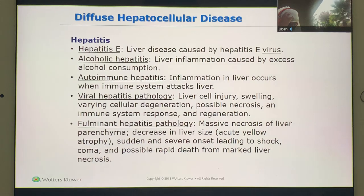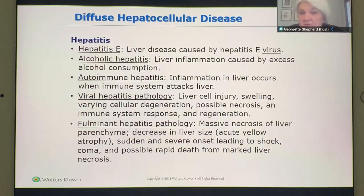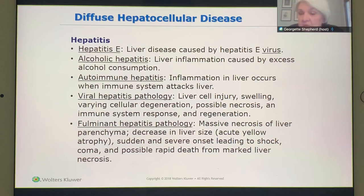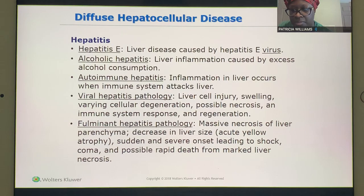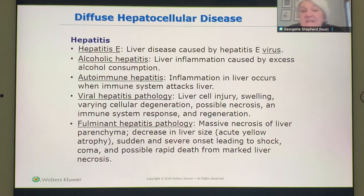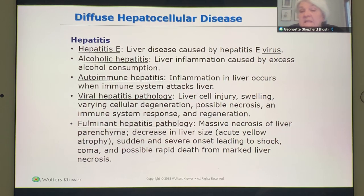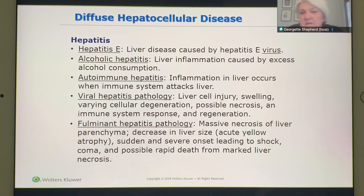But if you eat better, take care of yourself and take your medicine the way that you are supposed to, then the liver can regenerate itself. A fulminant — it's massive necrosis of the liver. The liver decreases in size. It could be sudden, it could be severe, leading to shock, coma, and death, depending upon the stages of the liver disease.